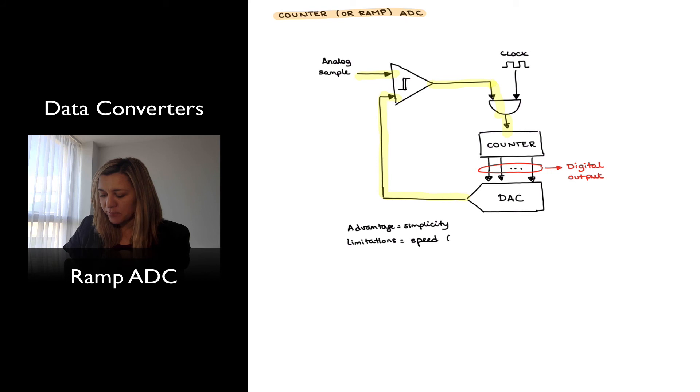So basically, as n increases, the number of counts increases exponentially, is equal to 2 to the n. And therefore that will be the major limitation of this circuit.